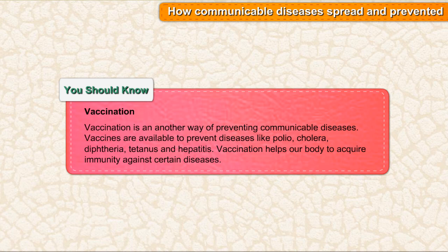Vaccination is another way of preventing communicable diseases. Vaccines are available to prevent diseases like polio, cholera, diphtheria, tetanus, and hepatitis. Vaccination helps our body to acquire immunity against certain diseases.